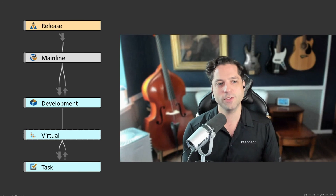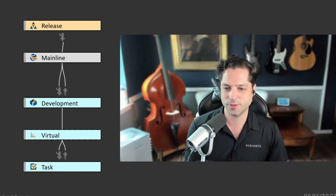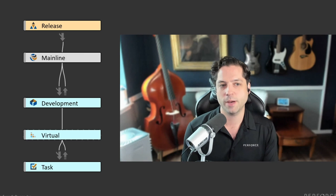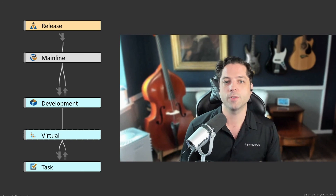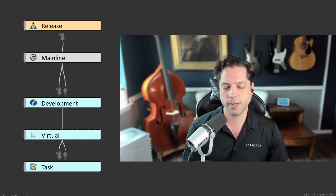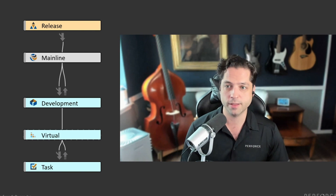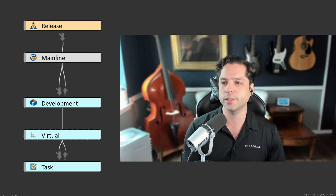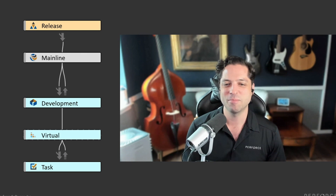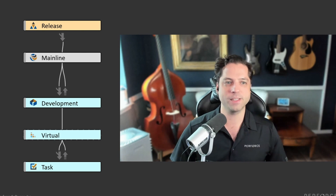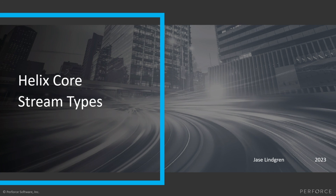So that was the overview of the five different types of streams. In a future video, I'd like to talk about the different ways you can customize stream specs to do really powerful things like stream components, import paths, writable imports, excludes, and isolates. But I hope that this at least gives you a rough sense of what you would use each stream type for.